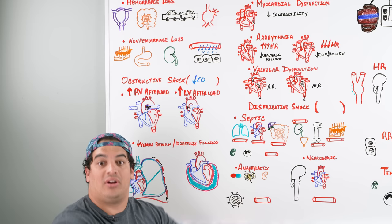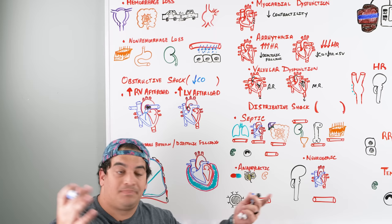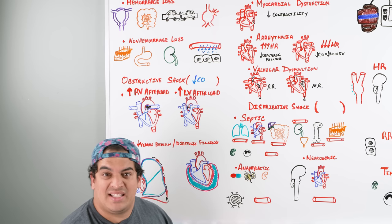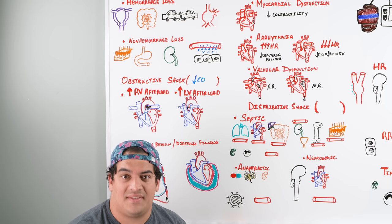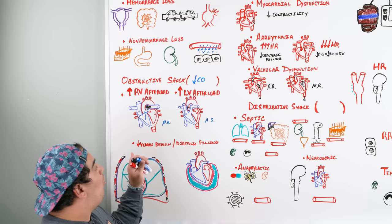On the right side, a massive pulmonary embolism can block blood flow from the right heart into the pulmonary vasculature, dropping cardiac output. On the left side, critical aortic stenosis prevents blood from exiting the left ventricle. Both are causes of obstructive shock via increased afterload.